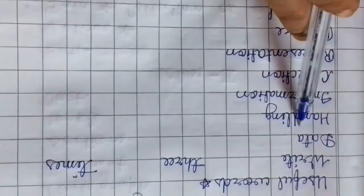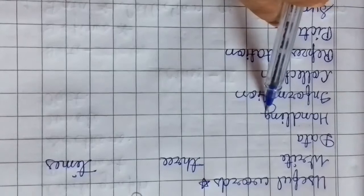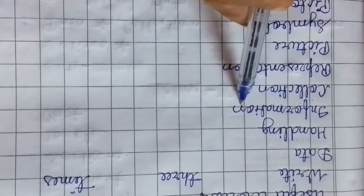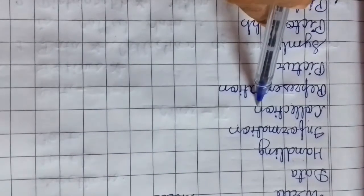Write the following useful words three times each: data (d-a-t-a), handling (h-a-n-d-l-i-n-g), information (i-n-f-o-r-m-a-t-i-o-n), collection (c-o-l-l-e-c-t-i-o-n), representation (r-e-p-r-e-s-e-n-t-a-t-i-o-n).